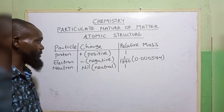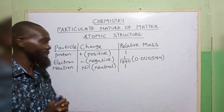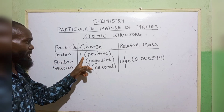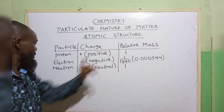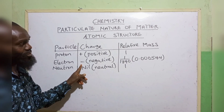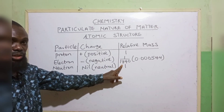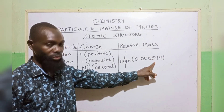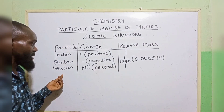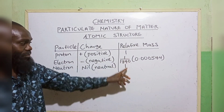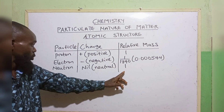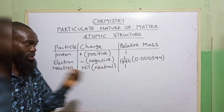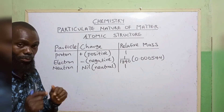Now let us look at the relative charges and masses of these subatomic particles. Proton is positively charged and has a relative mass of one. Electron is negatively charged and has a relative mass of 1 over 1,840, which is approximately 0.0005. Then the neutron has no charge but has a relative mass of one. So neutron and proton have the same relative mass, while the electron is very, very small, approximately 0.0005.